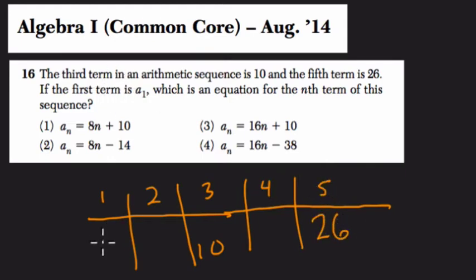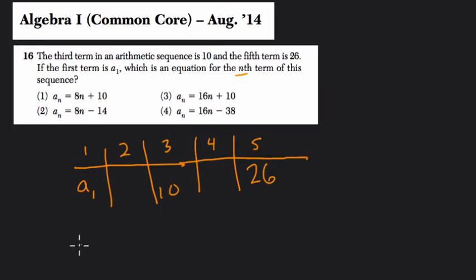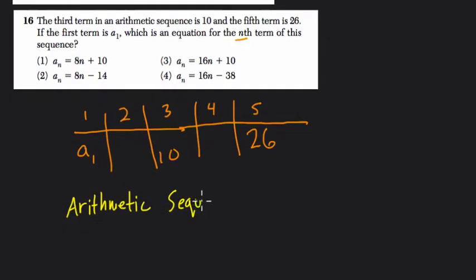If the first term is a sub 1, that's this term right here, which is an equation for the nth term in this sequence? So an arithmetic sequence, I think I've heard it pronounced both ways. What is that? Well a sequence is just an ordered list of numbers.